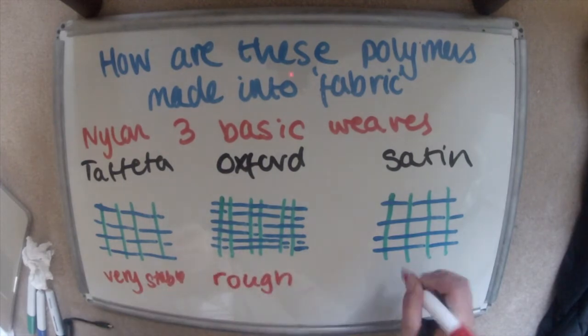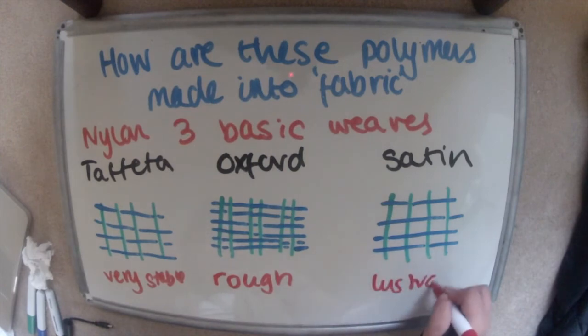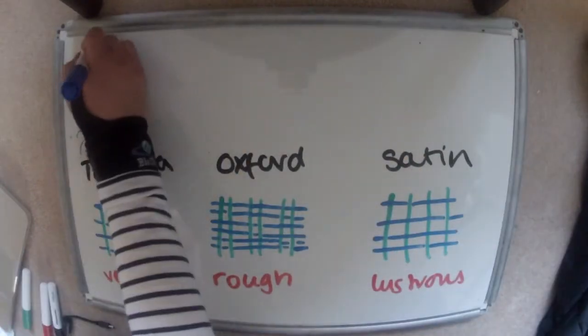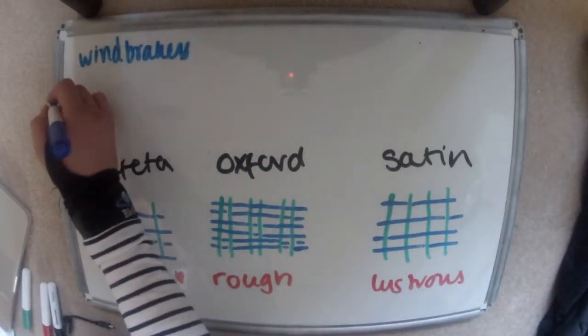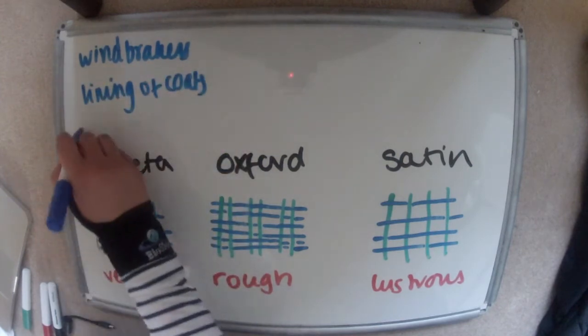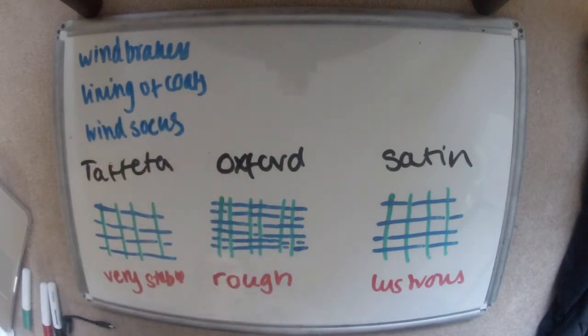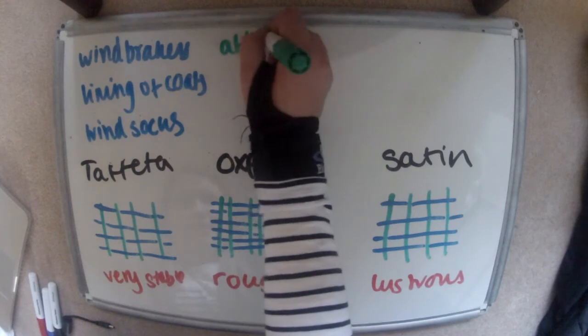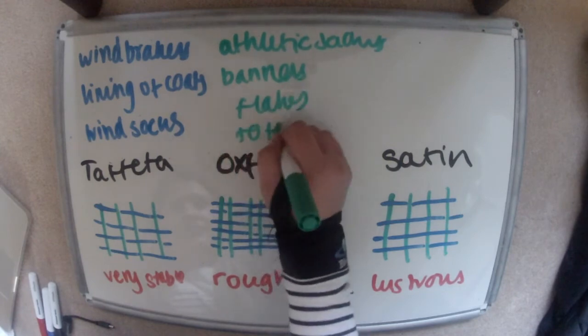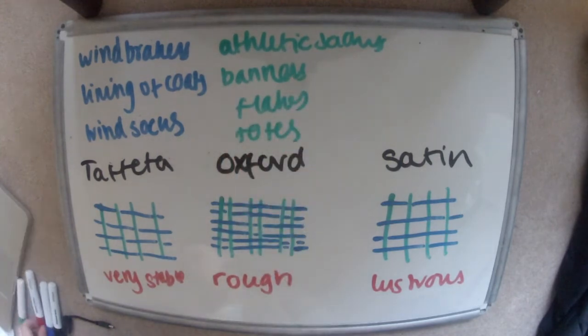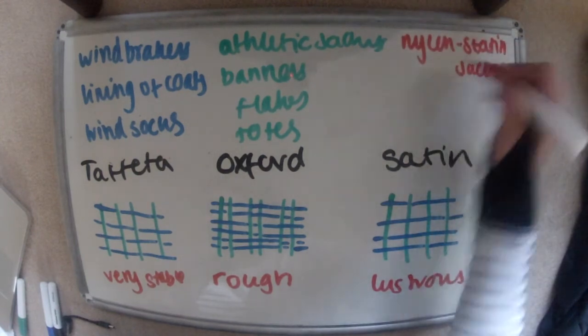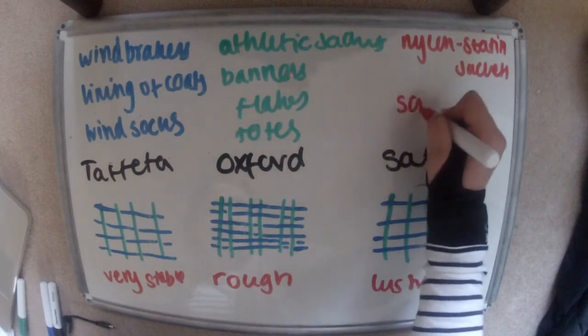So just a few uses of them: the taffeta is used for windbreakers like a raincoat, it's used for the lining of coats, and it's used for windsocks like you see near airfields. Oxford is used for athletic jackets that you run in, banners, flags, tote bags you carry around. Nylon satin jackets, what the satin weave is used for, and sometimes it's used for banners.